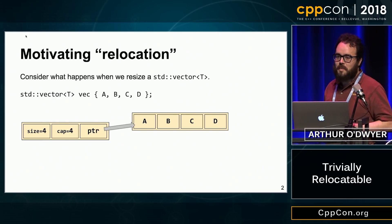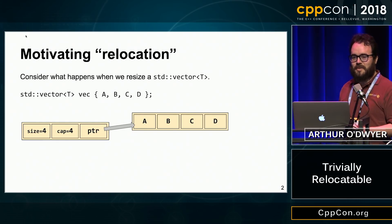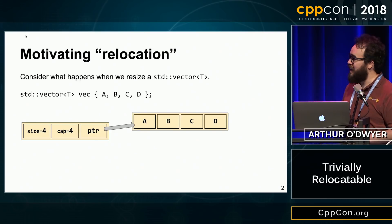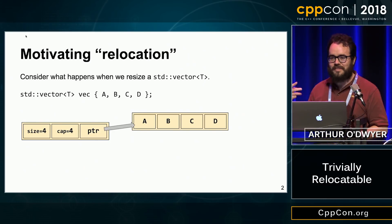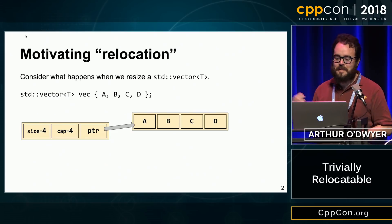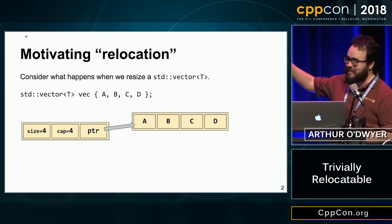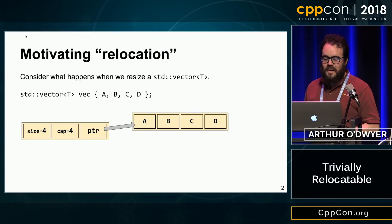Consider what happens when we resize a std::vector, for example. This is my usual test case here. I have a vector — it's got a size and a capacity and a pointer to some heap-allocated memory, and it's got these three T objects: a, b, c, and d.